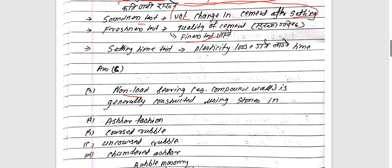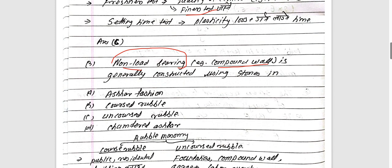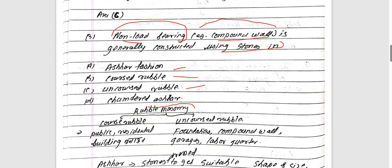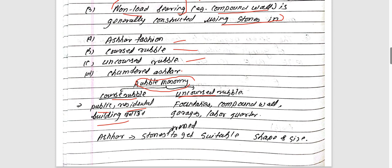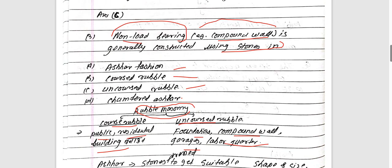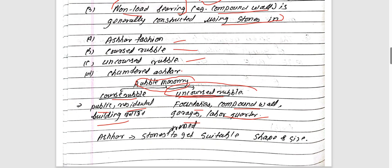A non-load bearing wall is a compound wall. Generally constructed using stones — coarse rubble or uncoursed rubble. There are two types of rubble masonry: coarse rubble, used for public and residential buildings, and uncoursed rubble, used for foundations, compound walls, garages, and labor quarters. For a non-load bearing compound wall, uncoursed rubble is not the best answer.